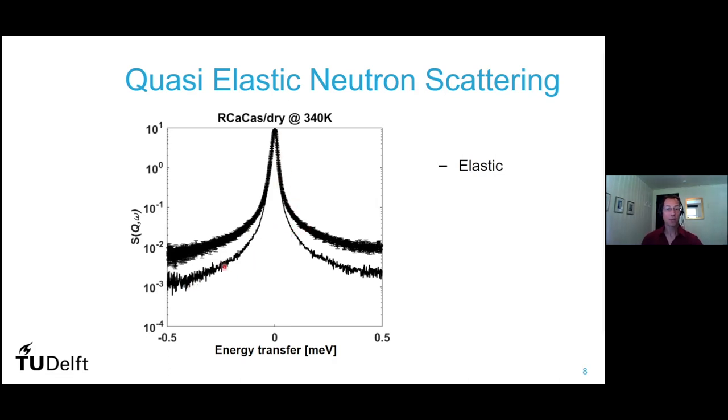Part of it, here this black curve is the resolution curve. That is the elastic part of the scattering. But then if you want to analyze this peak in detail, then there's one wider peak, which we have associated with fast movements of the proteins.